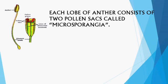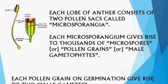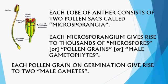How many pollen sacs are present in a bilobed anther? A bilobed anther has two lobes, and each lobe consists of two pollen sacs, meaning four pollen sacs are present in an anther. Each microsporangium gives rise to thousands of microspores, or pollen grains, which are the male gametophytes. Each pollen grain on germination gives rise to two male gametes or male nuclei.